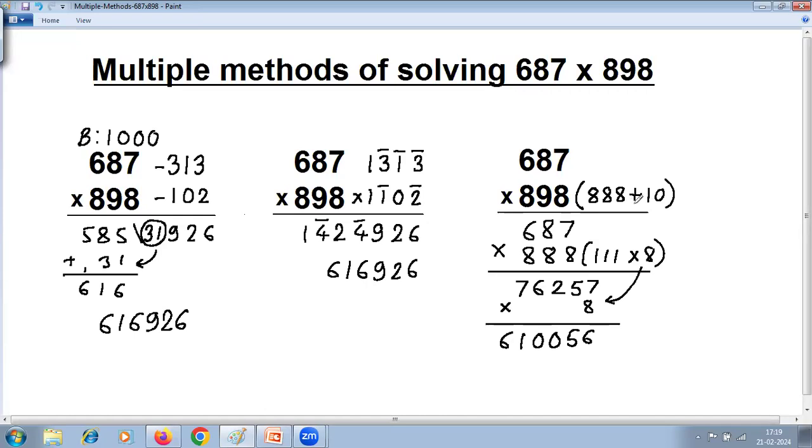Finally, you have to add 687 into 10. 687 into 10 is 6,870. This is 6. 5 plus 7 is 12, so 2 carry 1. 8 plus 1 is 9. This is 6. Answer: 616,926.